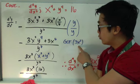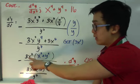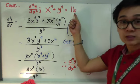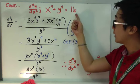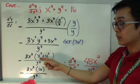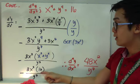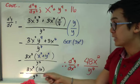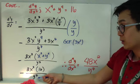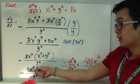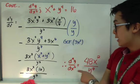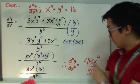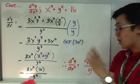Kaya ko ginawa ito kasi nung tinanggal ko si 3x² at tinactor out ko siya, yung x⁴ + y⁴ from the original problem is equal to 16. So pwede pa rin natin siyang i-substitute at i-plug in dito sa expression na ito. So yung x⁴ + y⁴ will now become 16. Dito na tayo mag-final — dito na yung final answer natin kasi wala na tayong masimplify. Hindi natin pwede i-cancel y⁷ and 3x². So ang pwede lang natin gawin is to multiply 3 and 16. Therefore, yung second derivative nitong original function na ito is simply 48x² all over y⁷.